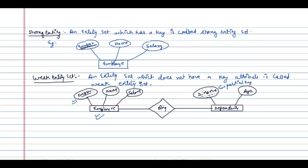If we use this partial key along with the key attribute of the Employee entity, then we can uniquely identify a dependent. With the help of a key attribute in a relation, we can uniquely identify every record. For example, if you have a roll number in a school, you can use it to uniquely identify a student.